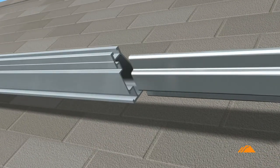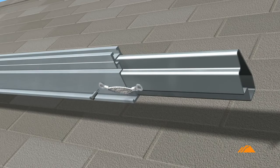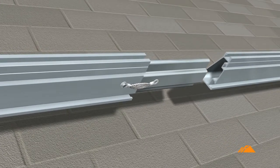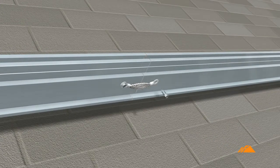Next, connect rail segments by inserting the Iron Ridge Rail splice into the first rail and securing the grounding strap assembly. Then slide the second rail over the splice and complete the grounding strap assembly.